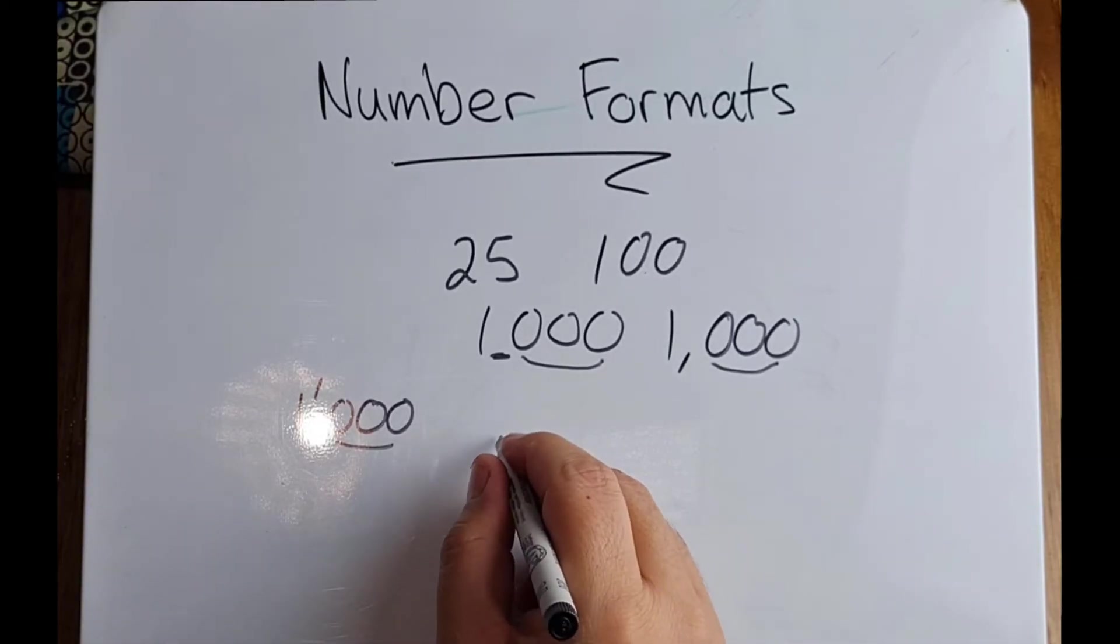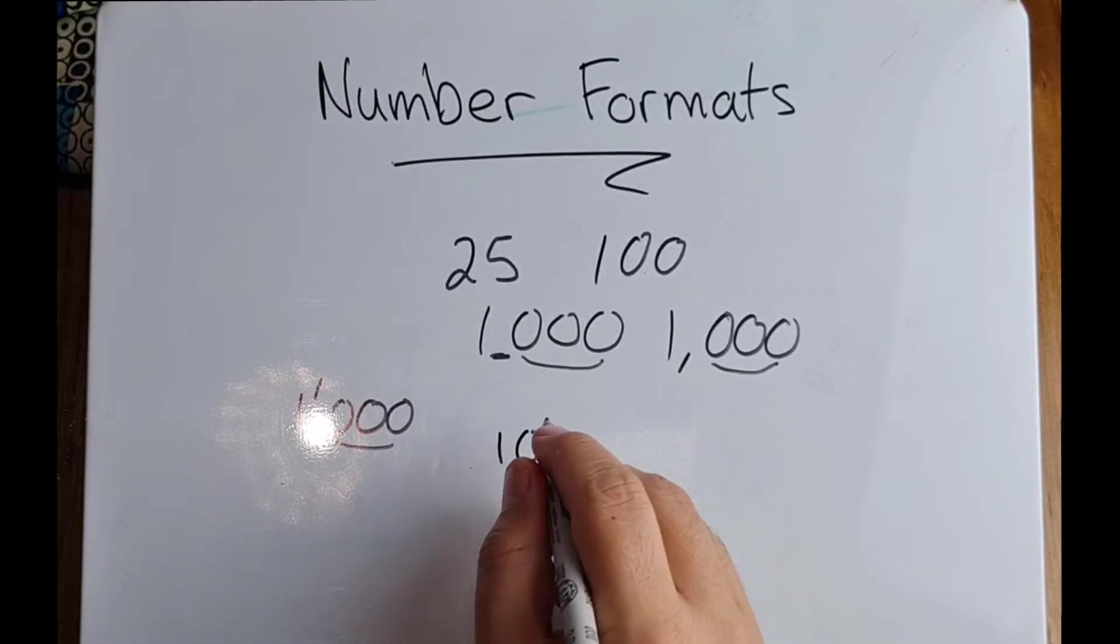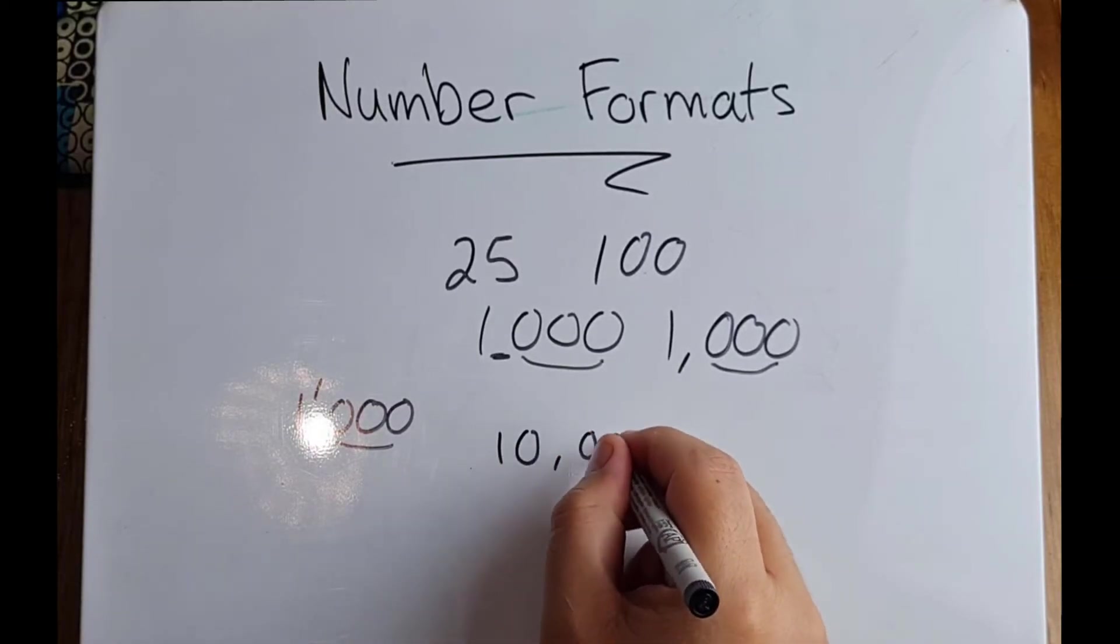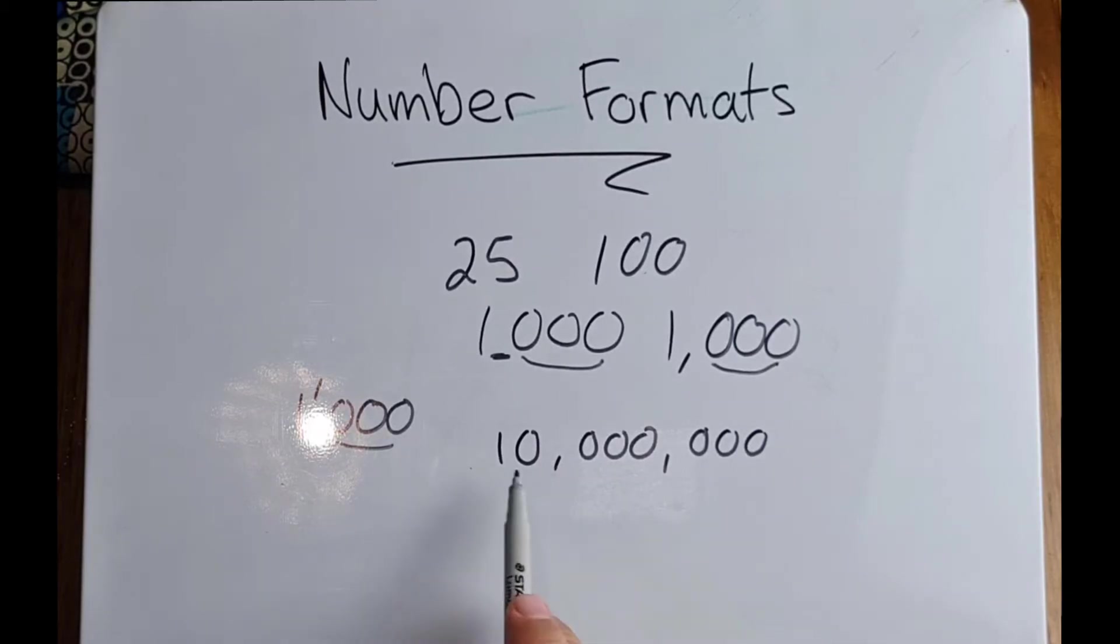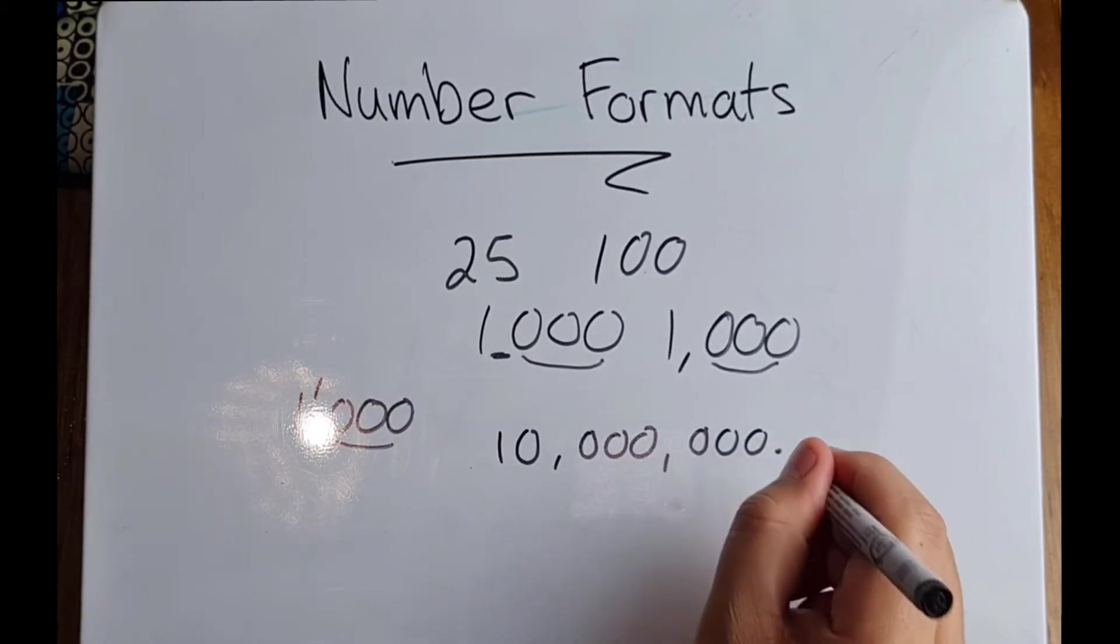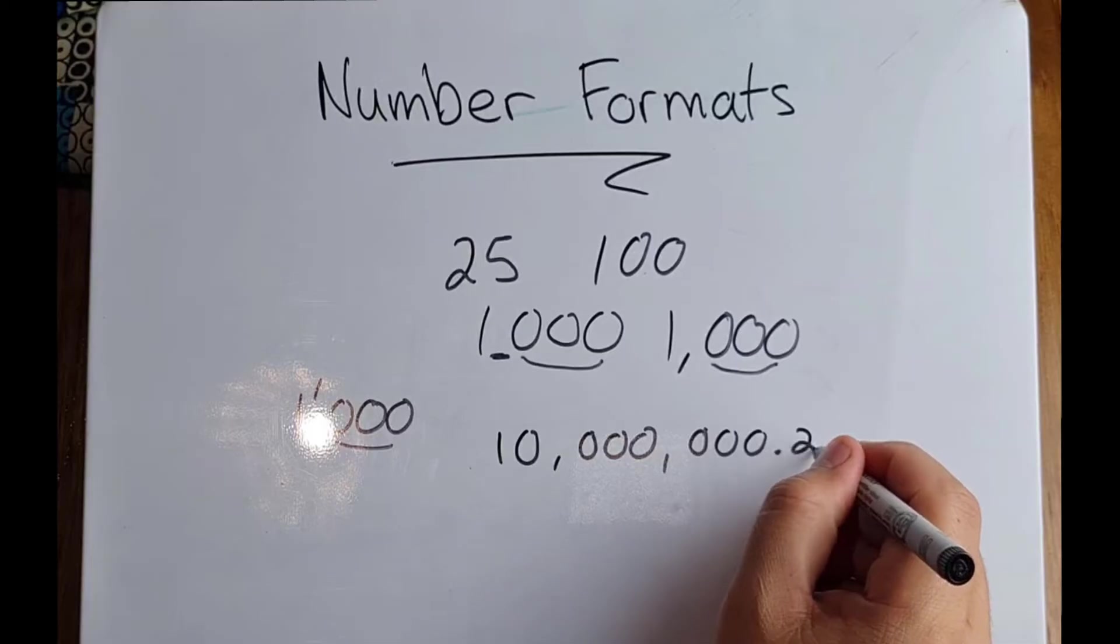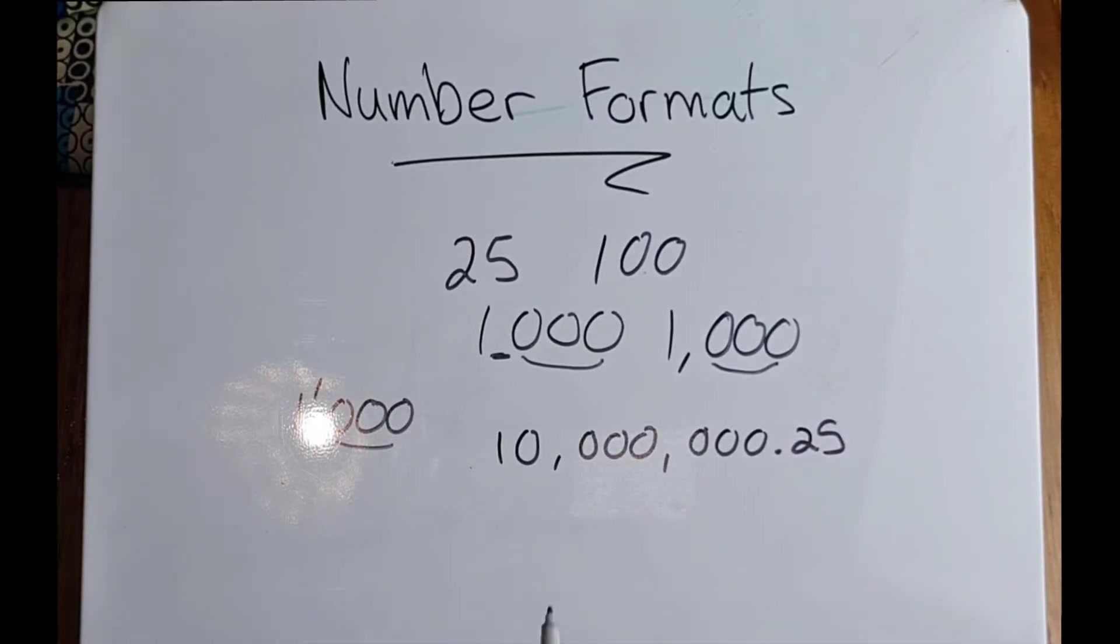If we take a number like 10 million, you can see that we've got our commas to separate it so that we can read it as 10 million. However, there's no decimal unless we have a decimal point, and then we say, let's say for argument's sake, it's 0.25. So this would be 10 million point 25.